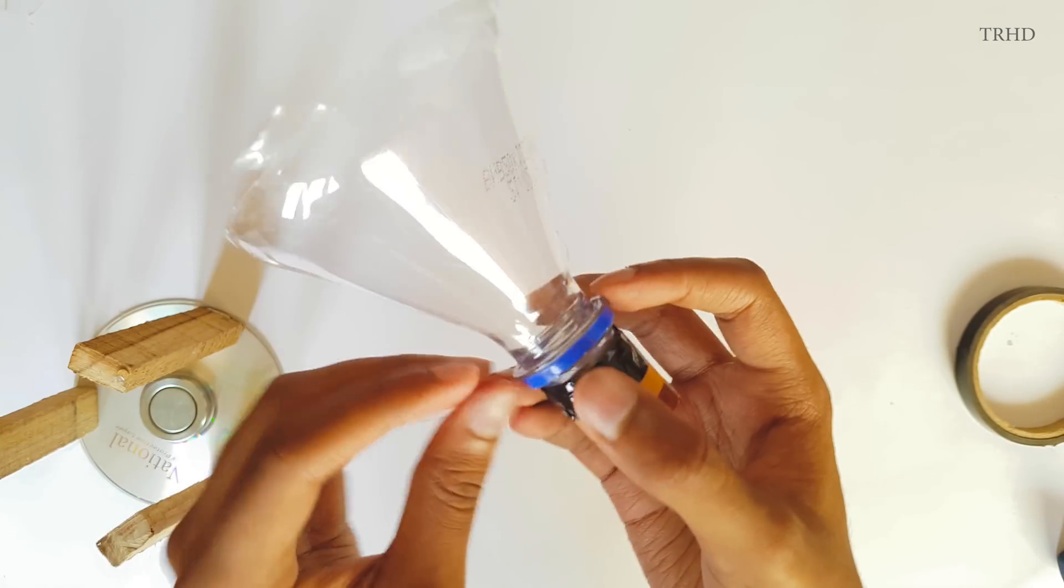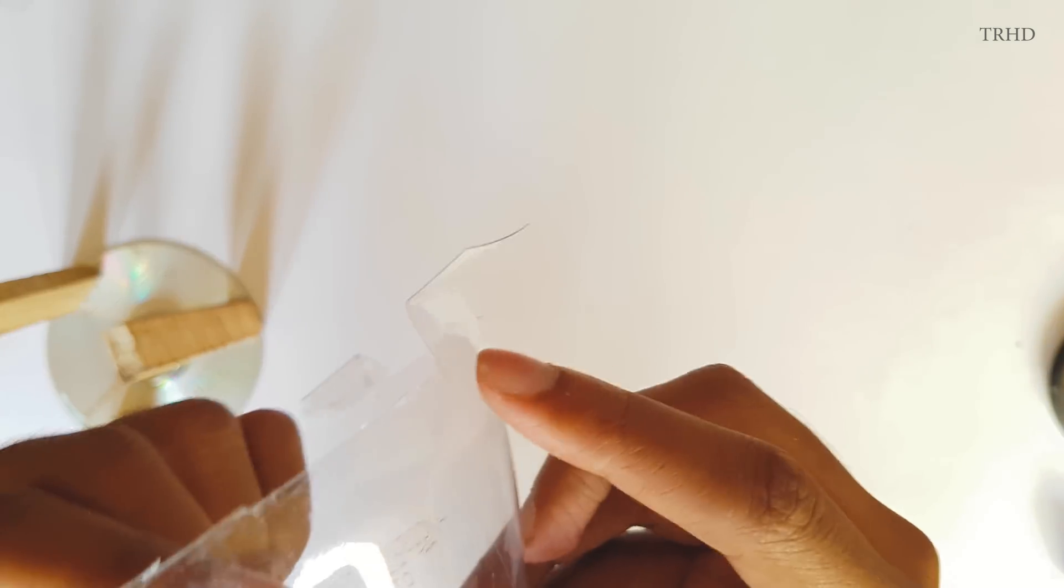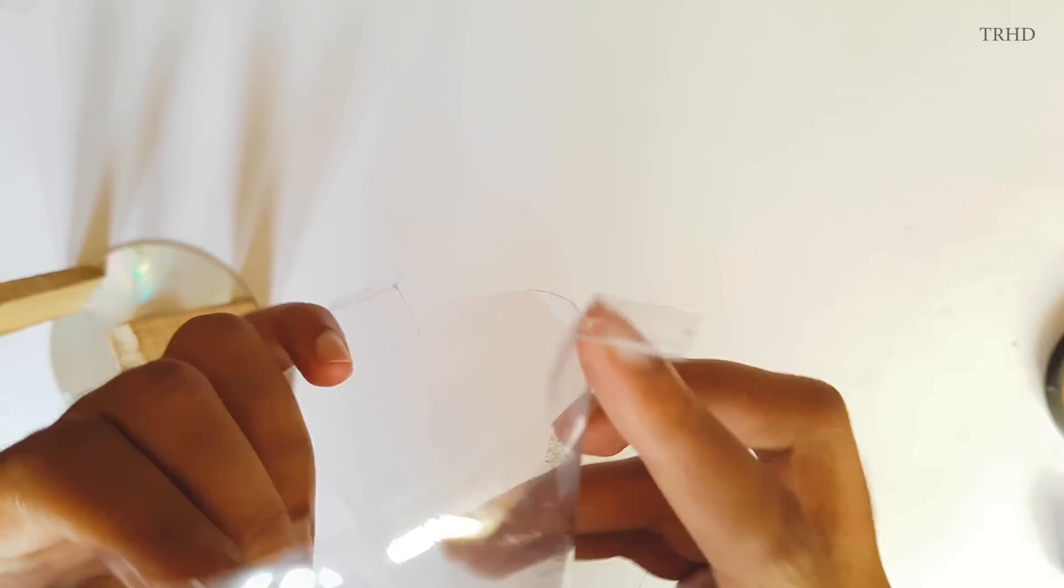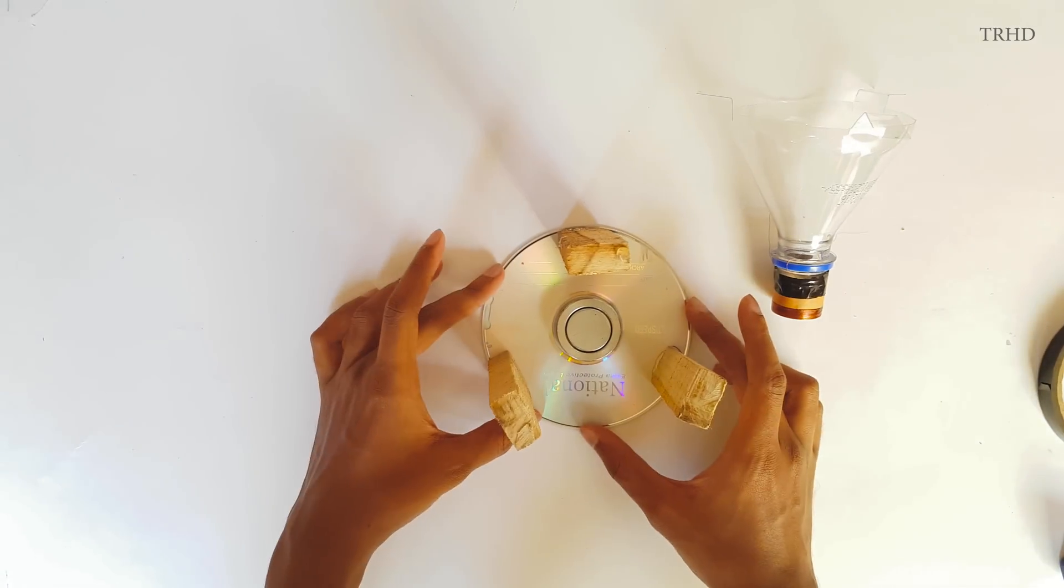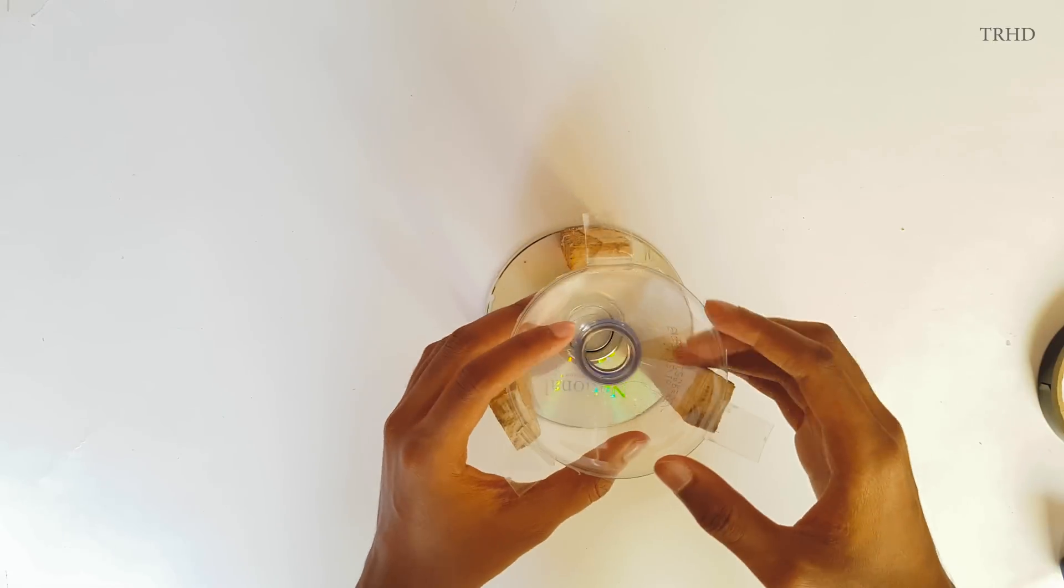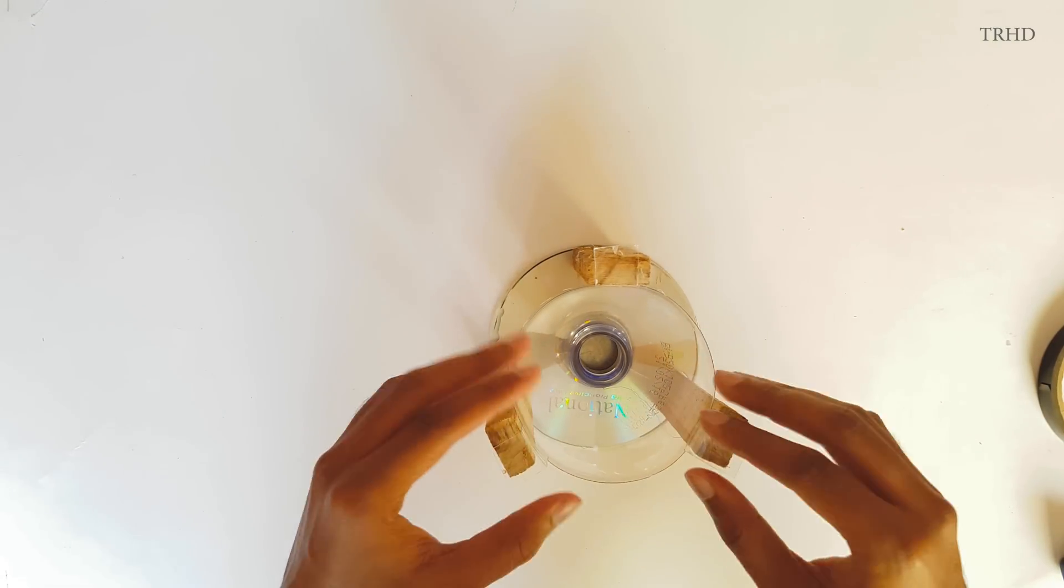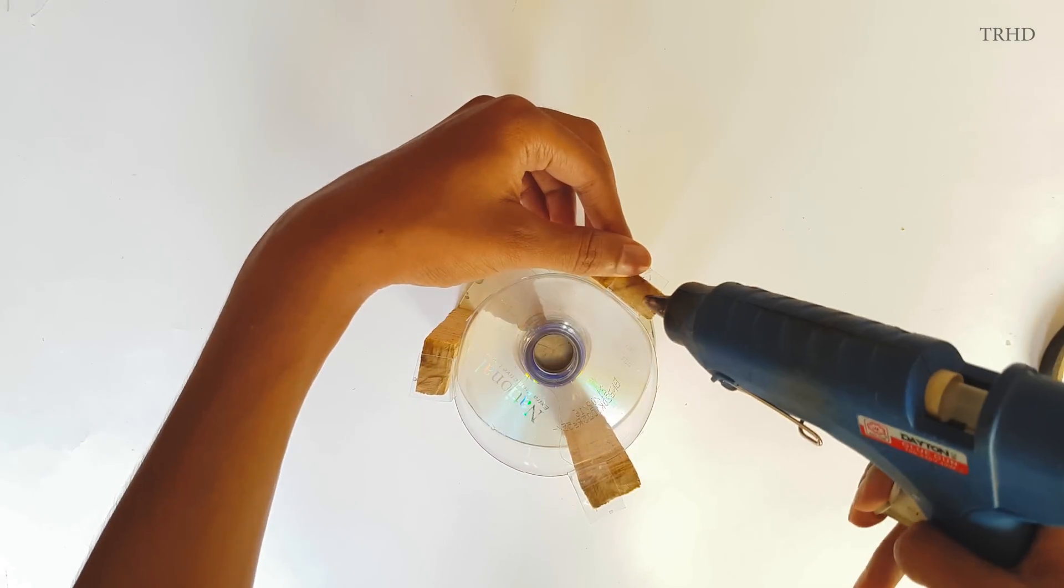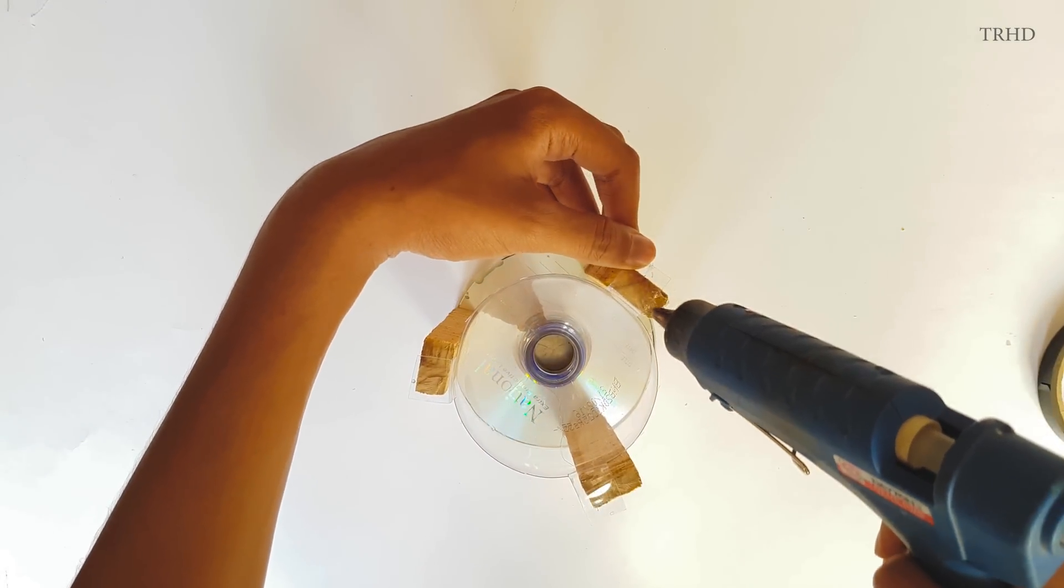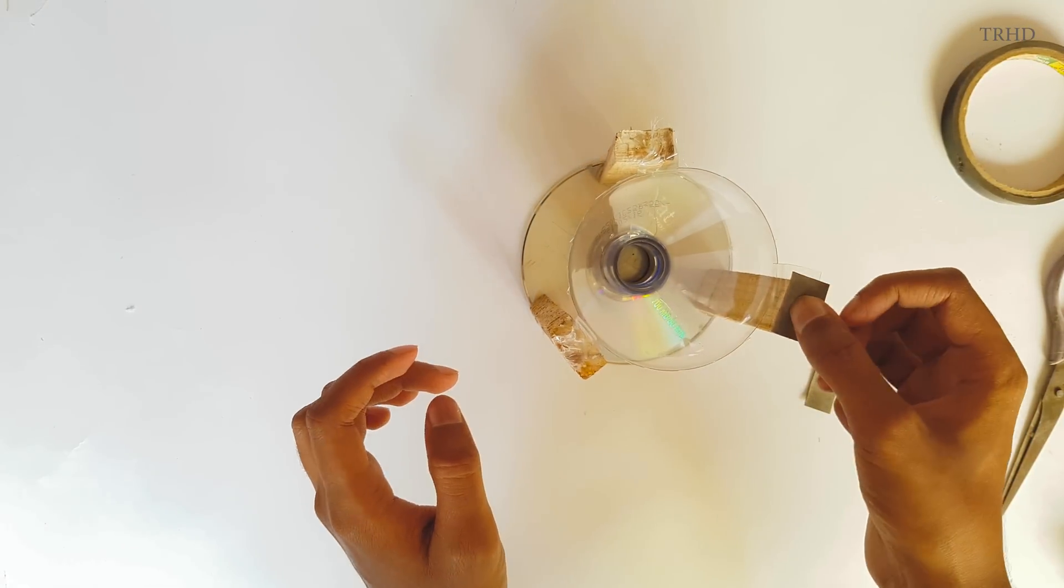And these are the voice coil leads. Now bend the flaps like this so that we can fix them onto the wooden sticks easily. Just place the coil on top of the magnet and stick the plastic cone using a glue gun to the wooden sticks. Stick a few paper pieces on top for extra grip.